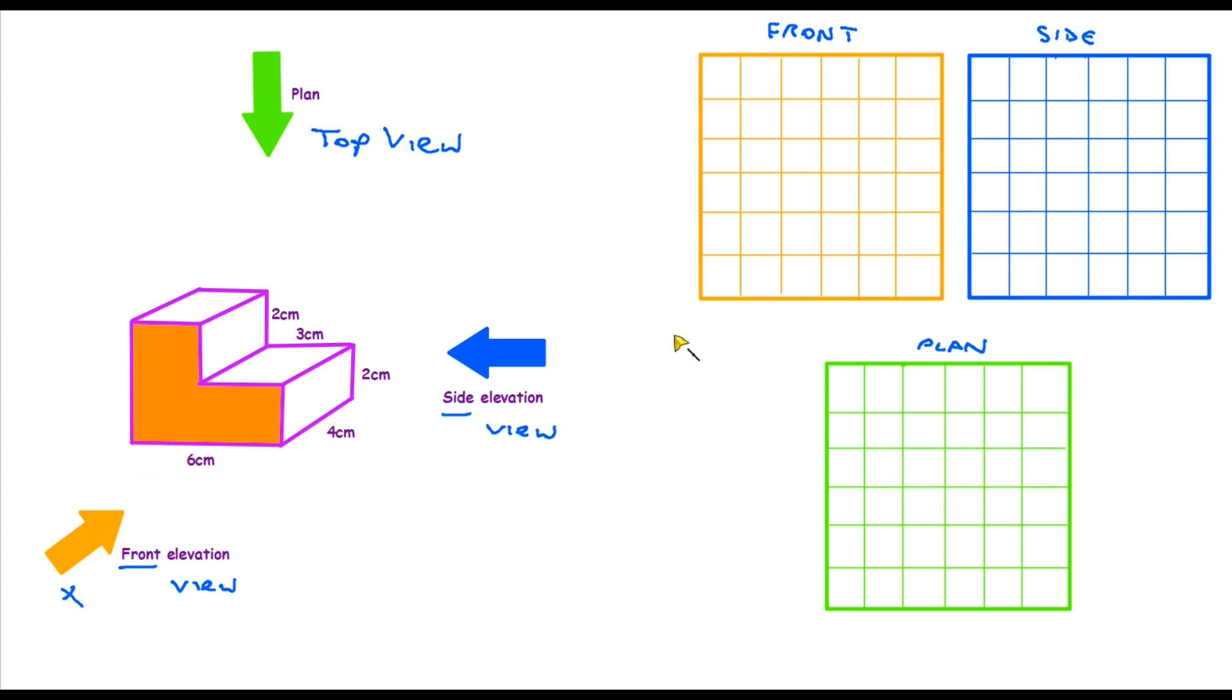This has a base of six centimetres. So from here one, two, three, four, five, six centimetres. We then have a front edge here which we know is two centimetres. So we would go up two centimetres. We then know from the measurement here that this line is three centimetres in. One, two, three. It then goes up here a further two centimetres. So there's our two centimetres along the top.